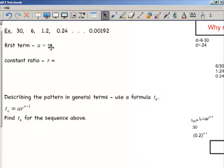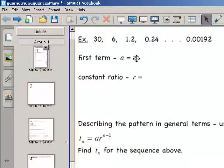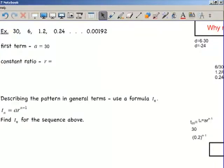What makes it geometric? The first term is 30. The a equals the first term is the same for arithmetic and geometric sequences. What makes this a geometric sequence is by definition there is a constant ratio.